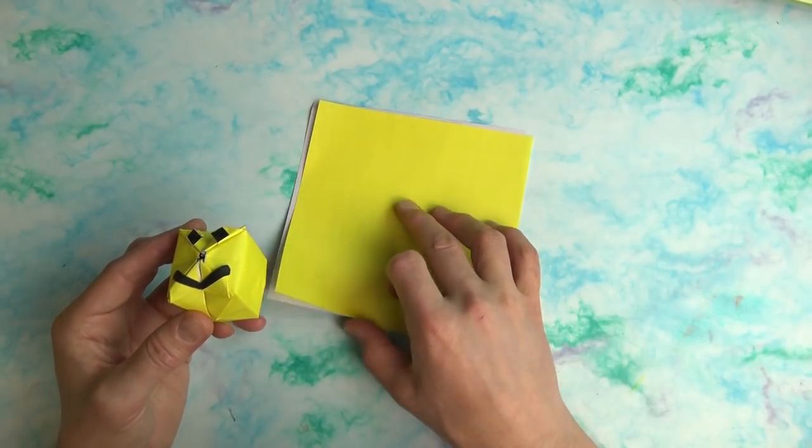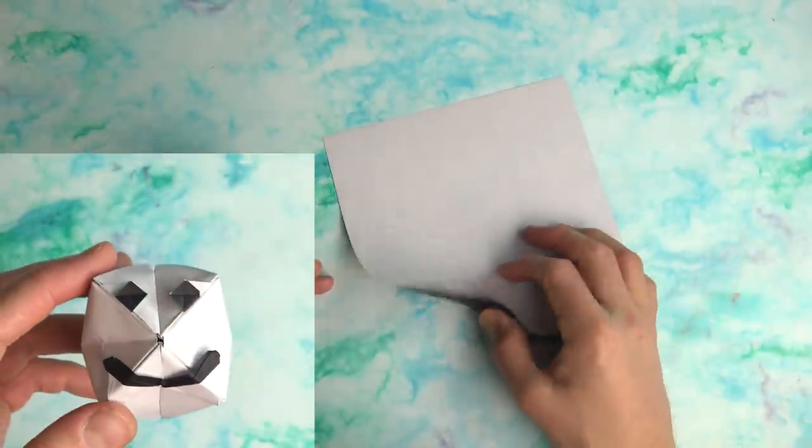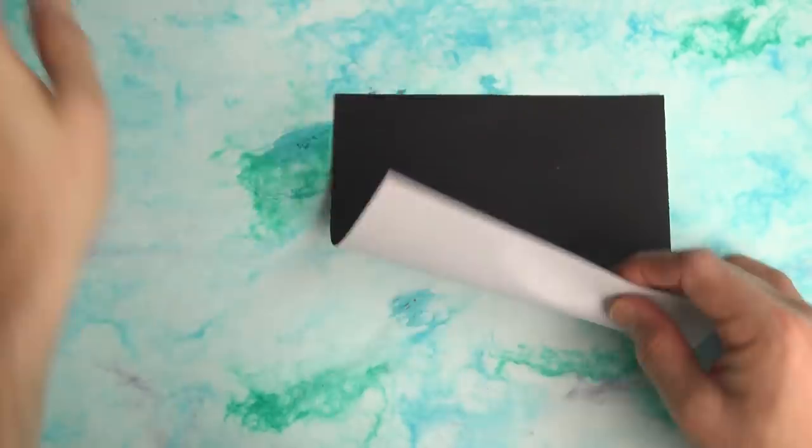But for this tutorial I'm going to use a single 7 inch square of black origami paper. So I'll end up with a white noob with black eyes. Begin colored side up and we're going to make a white waterbomb base.